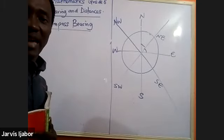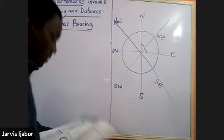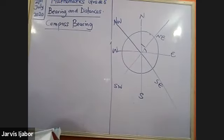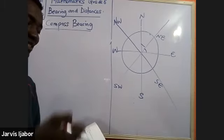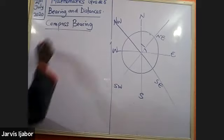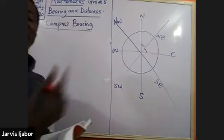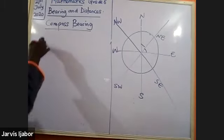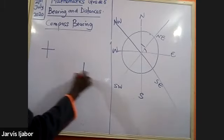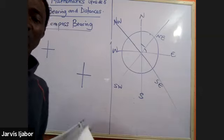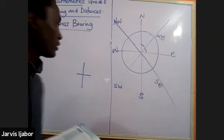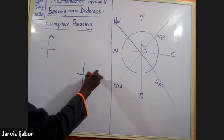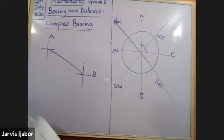Now we come to compass bearing. The concept of compass bearing is to show two compass points at A and B — we're comparing two points and trying to relate their bearings one from the other. If I mark this as A and this as B and draw a line, there are two bearings you can get. Please be very active and have your drawing materials with you.